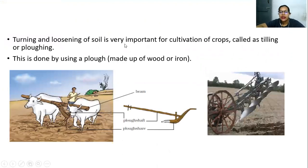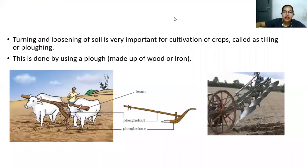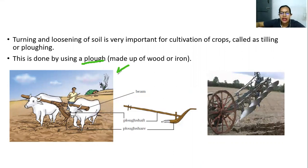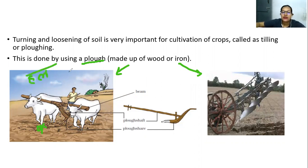Turning and loosening of the soil is very important for cultivation of crops, and this process is called tilling or ploughing. This is done using a plough, which can be made of wood or iron. In the old days, farmers used an ox-drawn plough called a hull in Hindi. There is a beam held on the neck of the ox, attached to a plough shaft, which holds the main plough share — the part that goes into the soil.